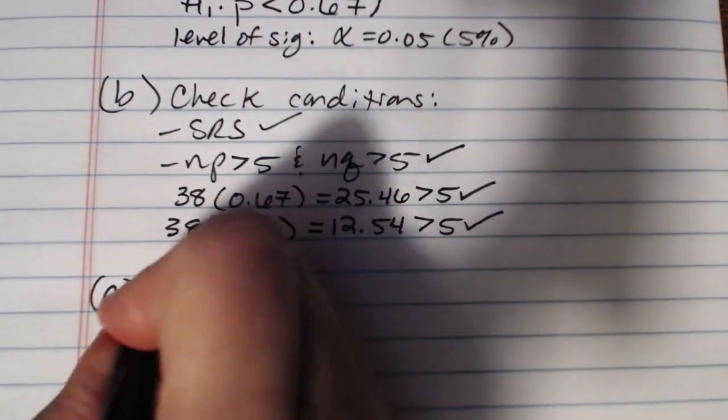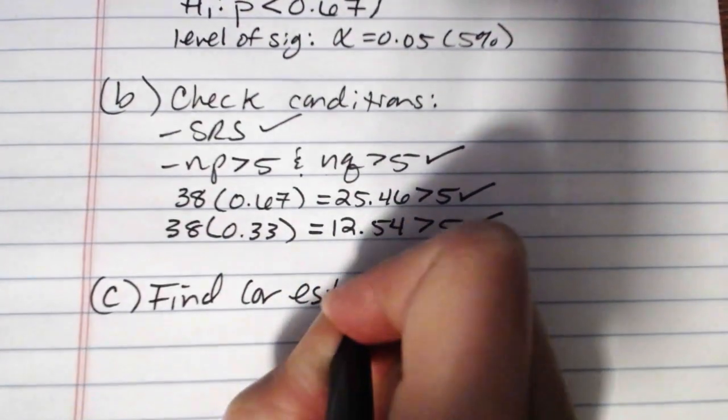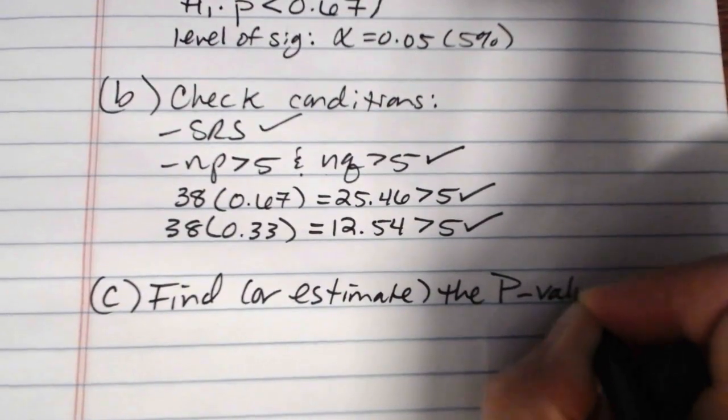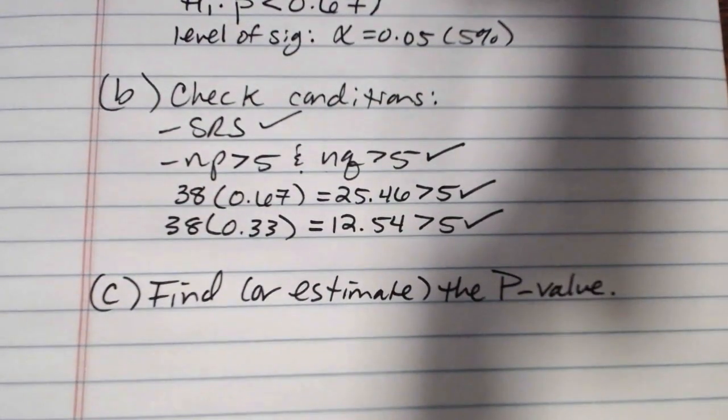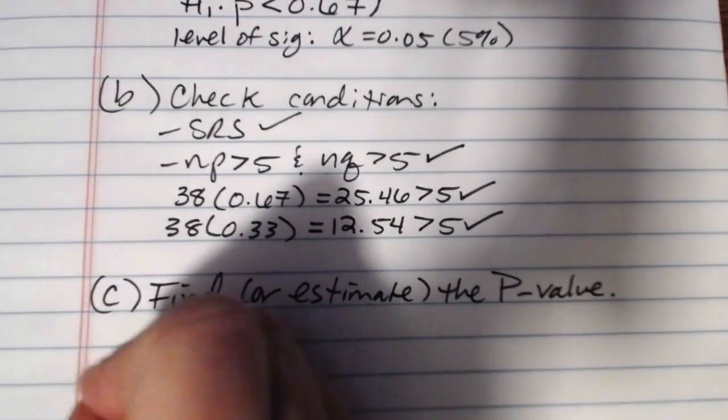In part C, we then want to find or estimate the P value. And this is capital P because this is the one that's going to help us conclude the test. If you're going to do this by hand, what you would do is you would start by coming up with your P hat. So this is the by hand method.